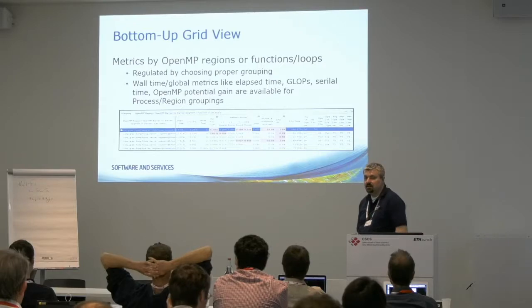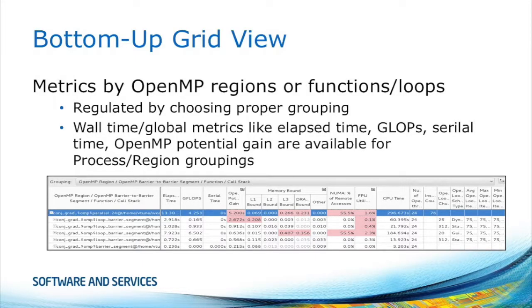This is how it looks — grid view, red means a potential problem. Here it's your OpenMP loops, OpenMP regions, hotspots — whatever you ask the tool to present. It tells you the potential gain, whether you're running out of L1, L2, L3 cache, whether you're DRAM bound, other accesses, the number of NUMA accesses, how many are from a remote socket, and FPU utilization. You can see this is a bad example for a NUMA code: 50% of the accesses are remote, meaning somebody likely allocated all the memory in the local NUMA domain and went across the whole machine, so every second memory access is a remote access.